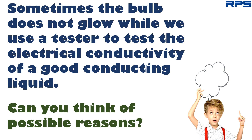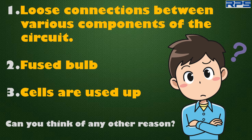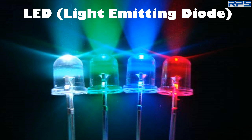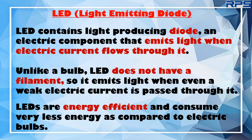Sometimes the bulb does not glow when we use a tester to test the electrical conductivity of a good conducting liquid. Possible reasons include loose connections between circuit components, a fused bulb, or used-up cells. Sometimes the current flowing in the circuit is too weak to produce sufficient heat to make the bulb glow. In such cases, we may use another device called an LED. LED stands for Light Emitting Diode — an electric component that emits light when electric current flows through it. Unlike a bulb, LED does not have a filament, so it emits light even when a weak electric current is passed through it.